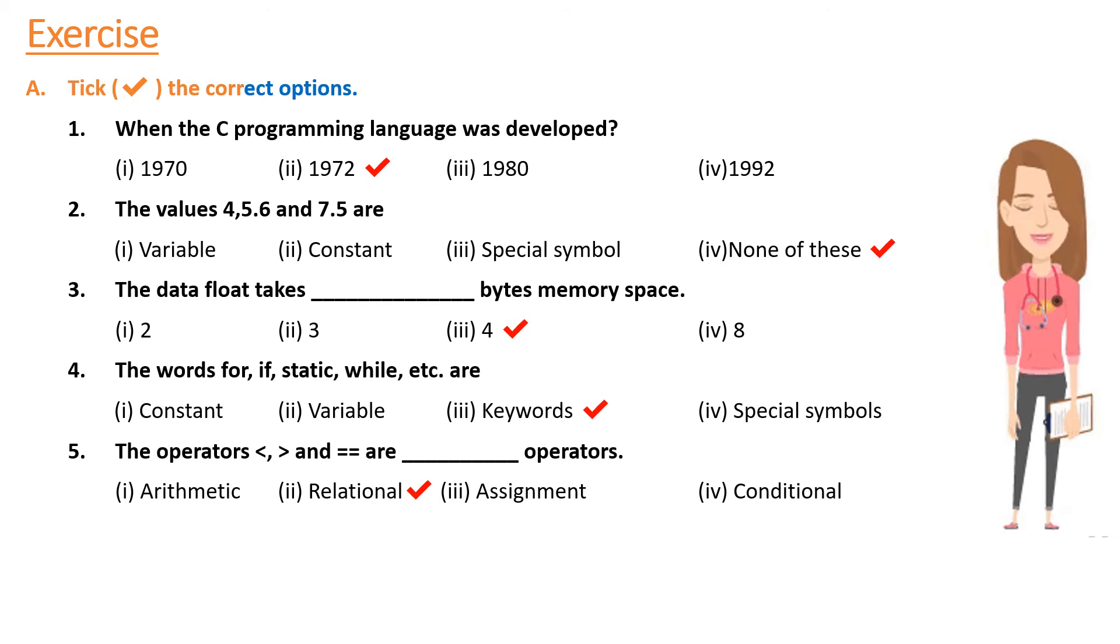Tick the correct options. 1. When the C programming language was developed. 2. The values 4, 5.6 and 7.5 are. 3. The data float takes underscore bytes memory space.